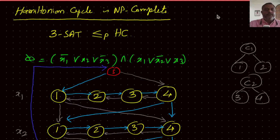Hi friends, welcome back. Now it is time to see whether the Hamiltonian cycle problem is NP-complete or not. The Hamiltonian cycle problem is of course an exponential time problem to solve, but if the answer is known, it just needs polynomial time to verify whether the given answer is right or wrong. Therefore, the Hamiltonian problem is an NP problem. To prove that it is NP-complete, we need to verify whether a well-known NP-complete problem can be reduced to the Hamiltonian cycle problem in polynomial time. So let's see whether the 3-SAT problem, which is a well-known NP-complete problem, can be reduced to it.